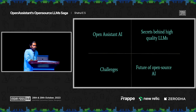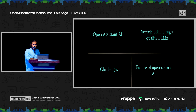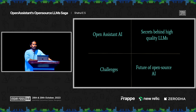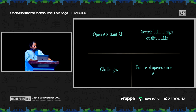This talk is generally divided into four parts. First, a little bit about Open Assistant AI. Second, the secrets behind creating the best quality open source large language models. Then we'll cover some challenges, and finally the future of open source AI.